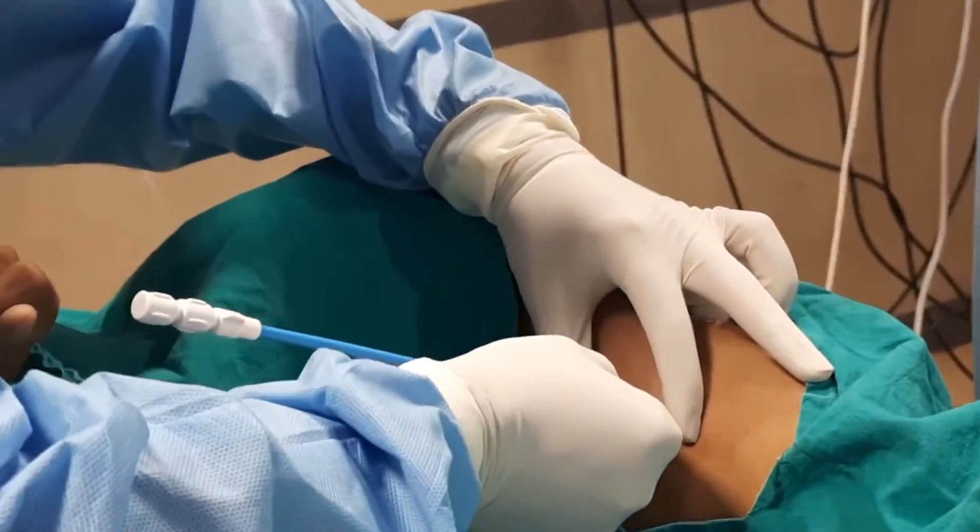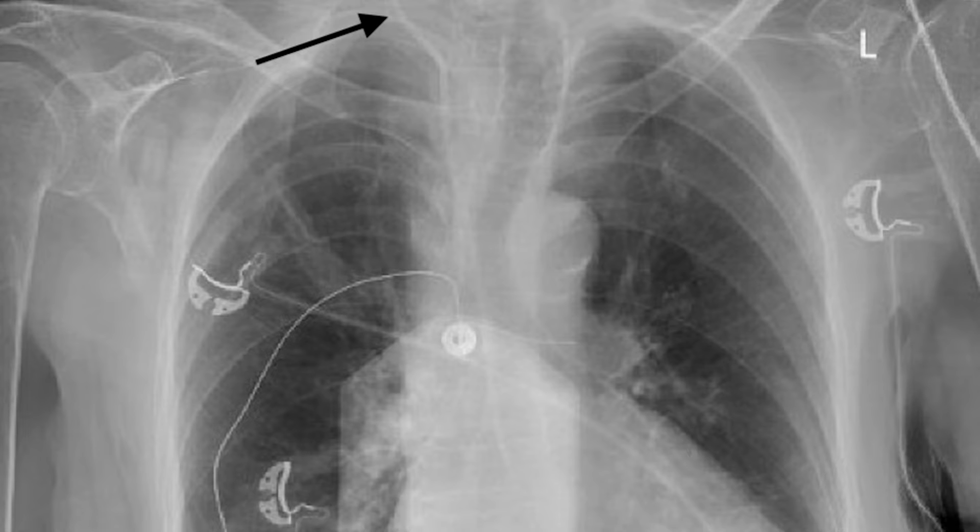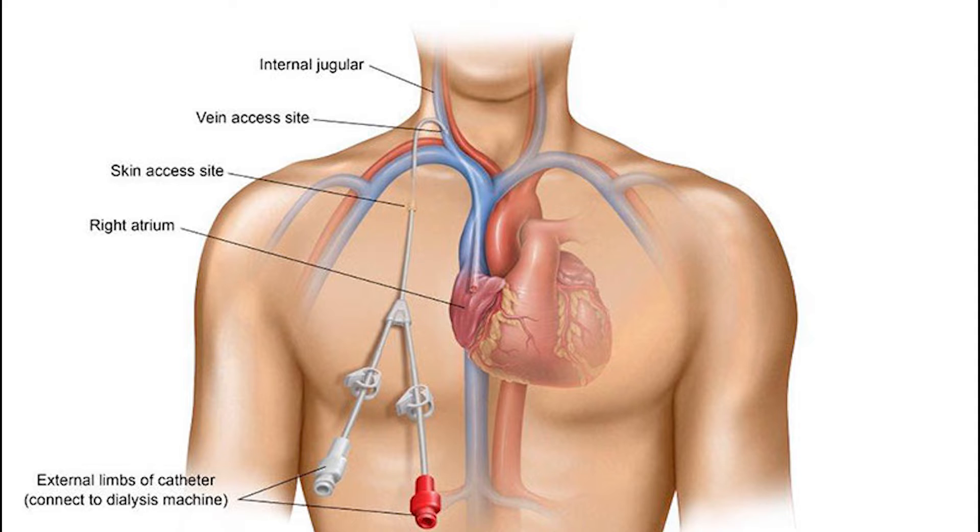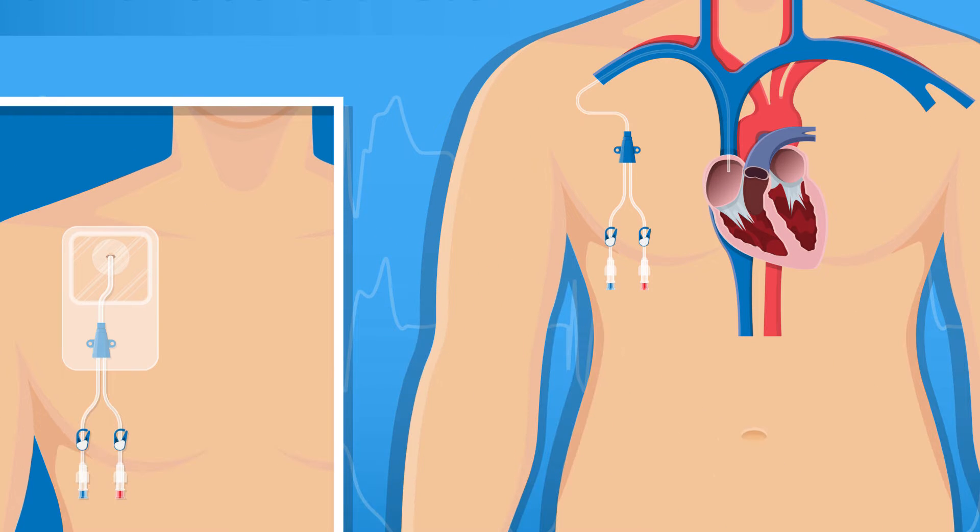An X-ray may be taken after a small ultrasound instrument has been used to guide catheter placement to ensure the catheter is positioned correctly. The catheter is frequently inserted into the subclavian vein beneath the collarbone.